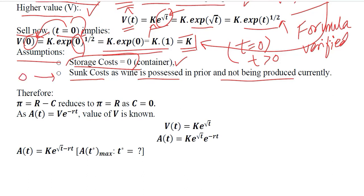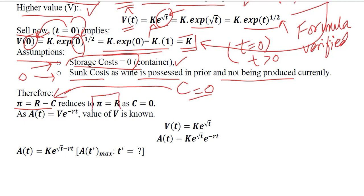Sunk cost means no new cost is incurred, so it equals zero. Storage cost is also zero. Neither production nor storage costs are present, so total cost equals zero. Applying the profit formula, C equals zero, meaning profit equals revenue only. Whatever revenue we earn will equal the profit.